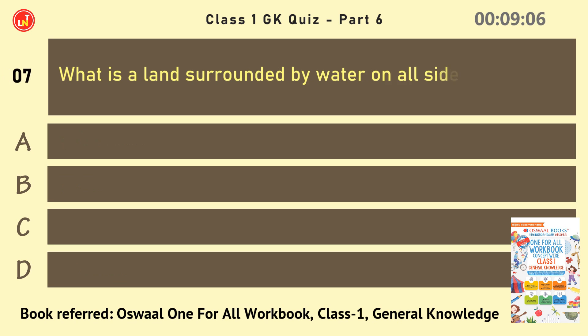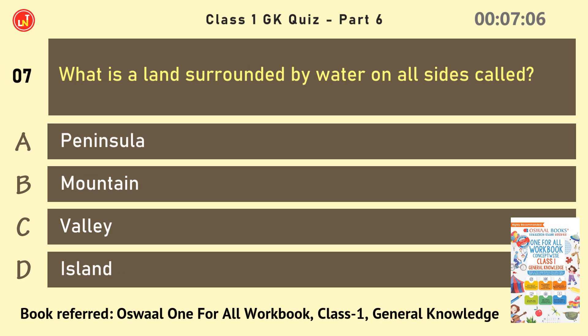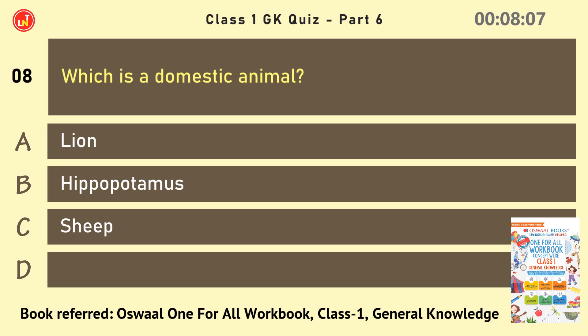What is a land surrounded by water on all sides called? Which is a domestic animal? Answer: Sheep.